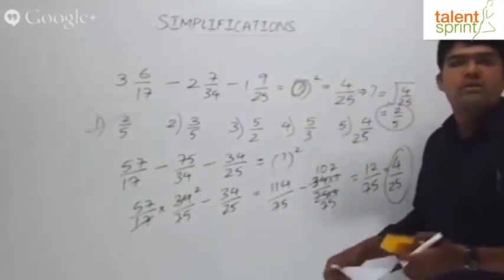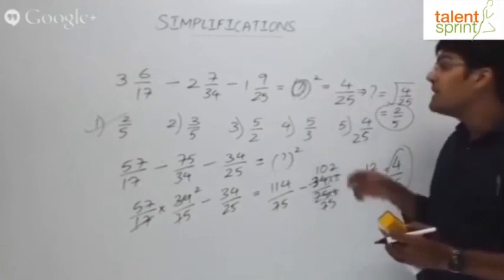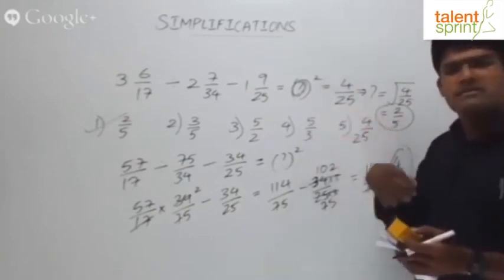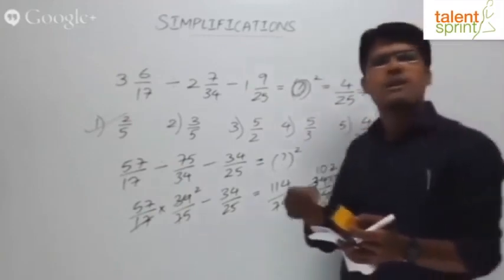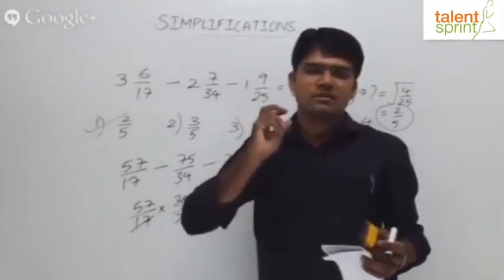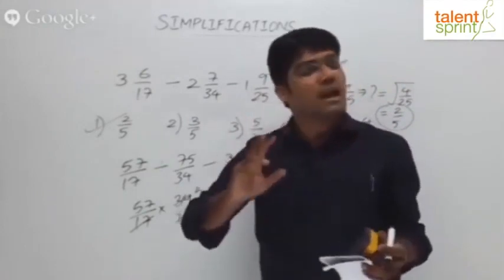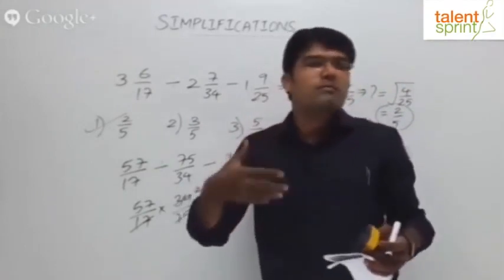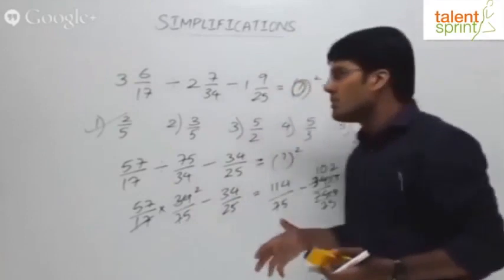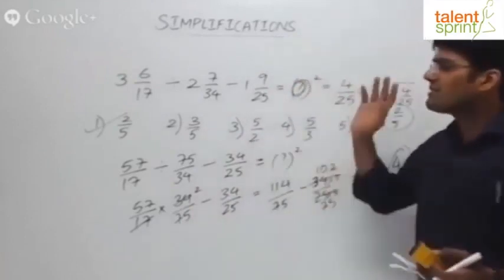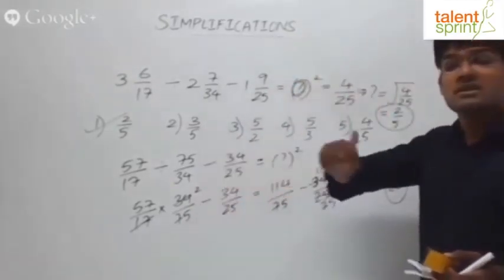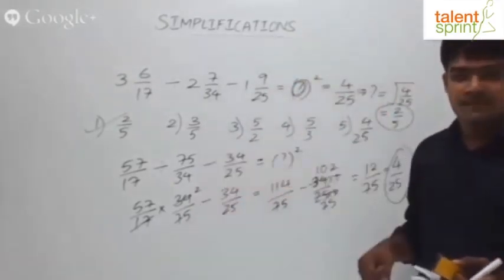Be careful — not only in fraction questions but wherever you find question mark squared or square root of question mark, don't mark the wrong answer in a hurry. The simple logic here is: convert divisions to multiplications, reciprocate the second fraction, and always check whether you need to take a square root at the end.